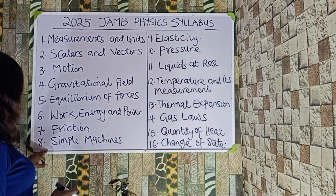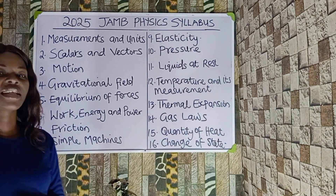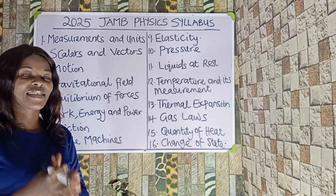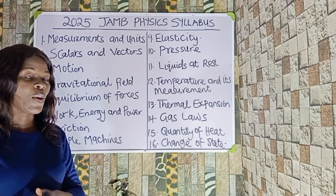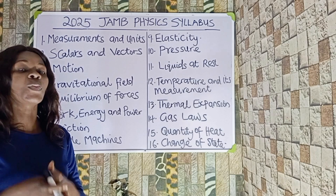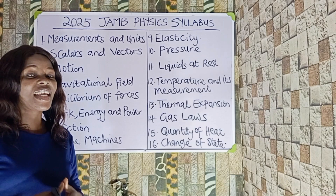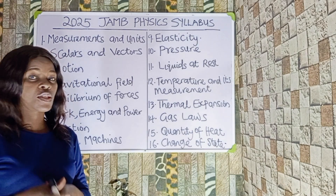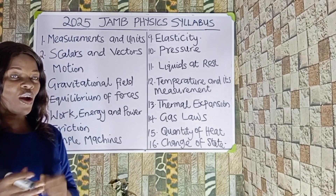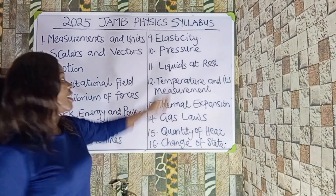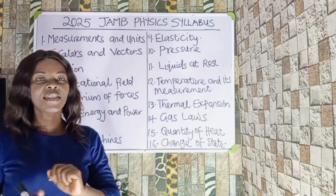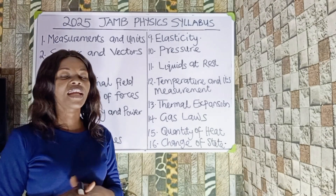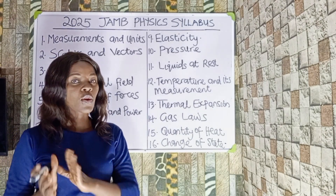The next thing we are going to look at is simple machines. You should know what simple machines are, examples of simple machines, and also the relationship connecting the efficiency, the mechanical advantage, and the velocity ratio. Number nine is elasticity — under this we are going to be looking at Hooke's Law.